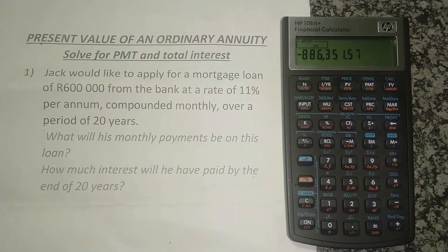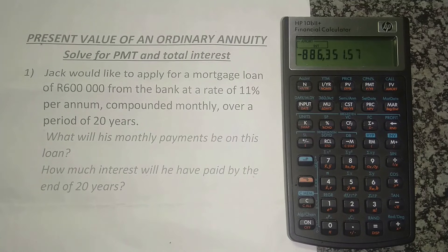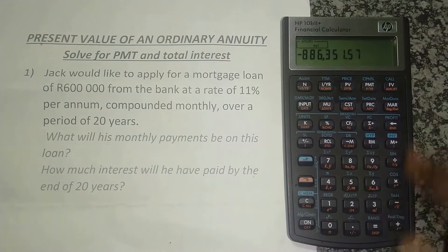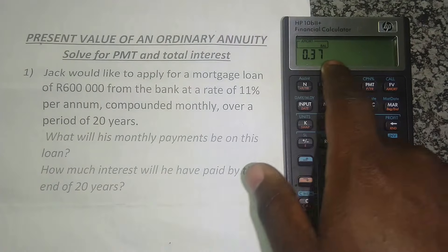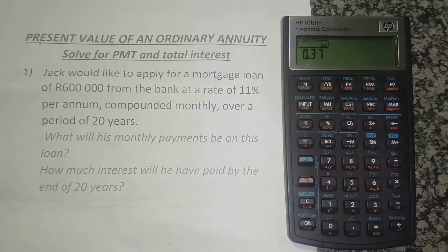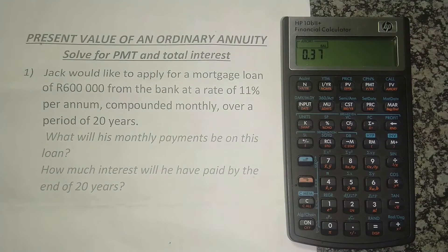You've paid interest which is way more than the actual principle you borrowed from the bank. That is why the more you borrow from the bank, the more interest you will pay — it's a very huge amount. Pressing equals again shows BAL, which is the balance still owed: 37 cents. That's just a rounding issue, but we are done.